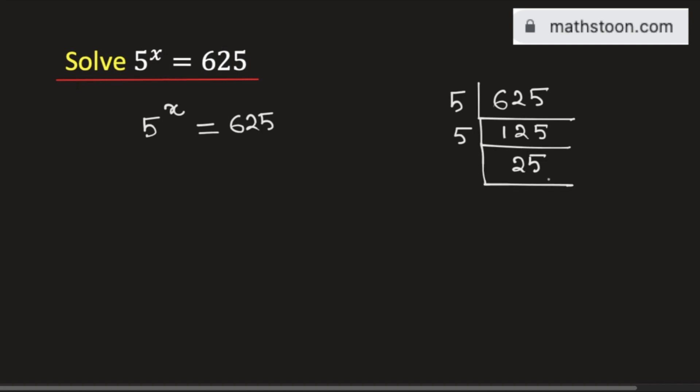And we know that 25 is divisible by 5 and we get 5 here. And finally, 5 is divisible by 5 and we get 1 here.